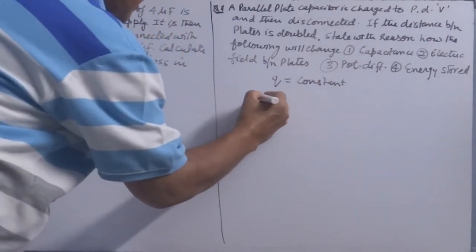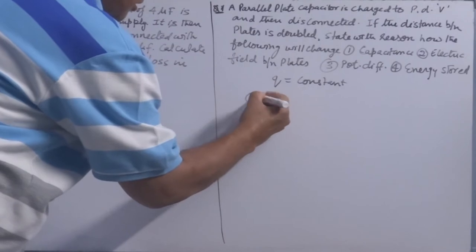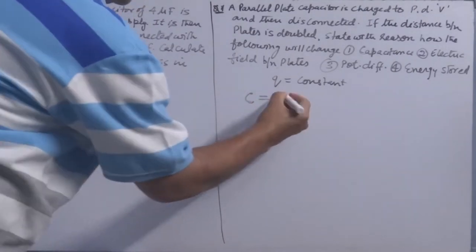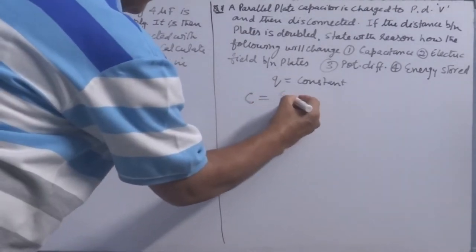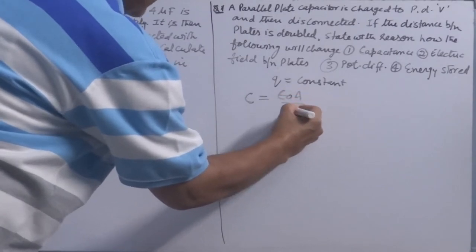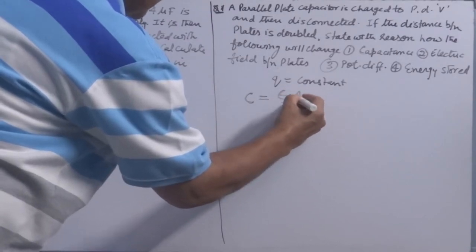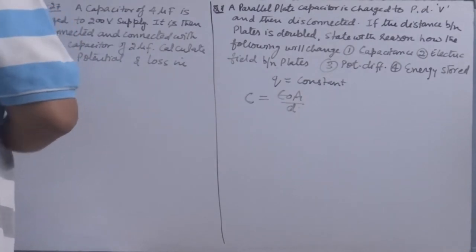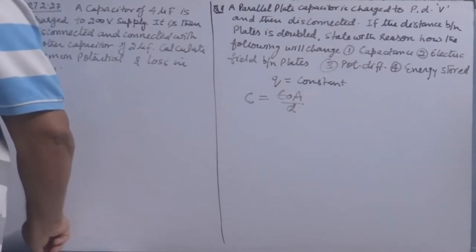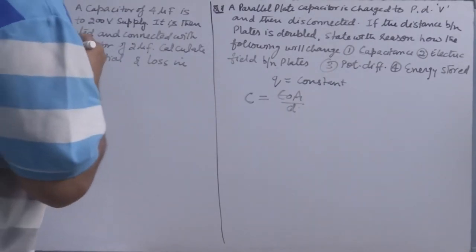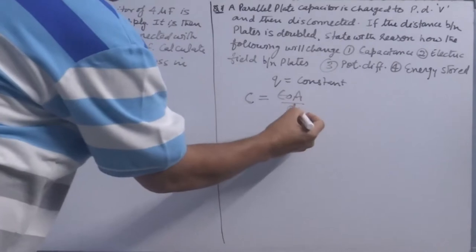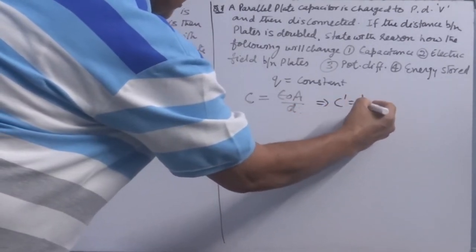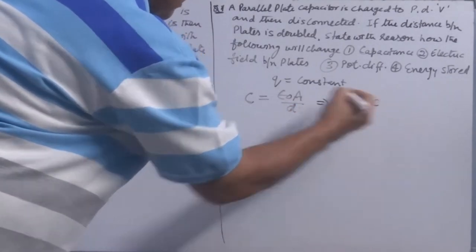Capacitance is equal to ε₀A/d. The question says the separation distance is doubled, so d becomes 2d. It means the new capacitance is half of the first capacitance.